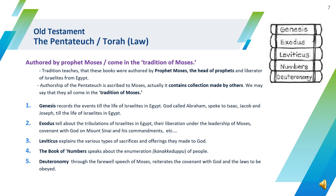Let us now learn about the first five books of the Old Testament. They are called the Pentateuch, or Torah, or Books of Law. Tradition teaches that these books were authored by Prophet Moses, the head of prophets and liberator of Israelites from Egypt. They contain collections made by others, so we can say these books come in the Tradition of Moses.